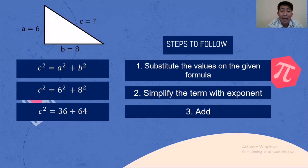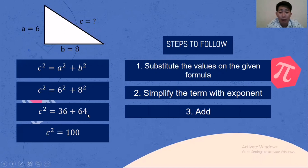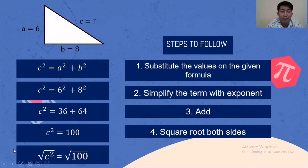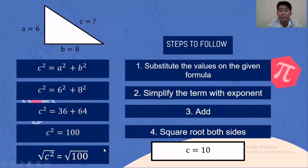Next, we add: 36 plus 64, that is 100. Then, square root both sides. The square root of C squared gives C, and the square root of 100 is 10. So the hypotenuse C is equal to 10.